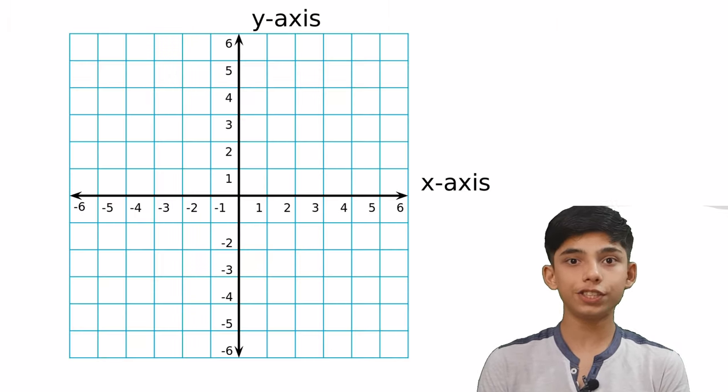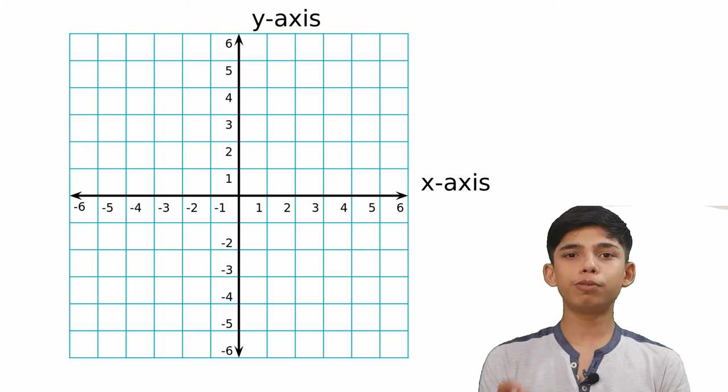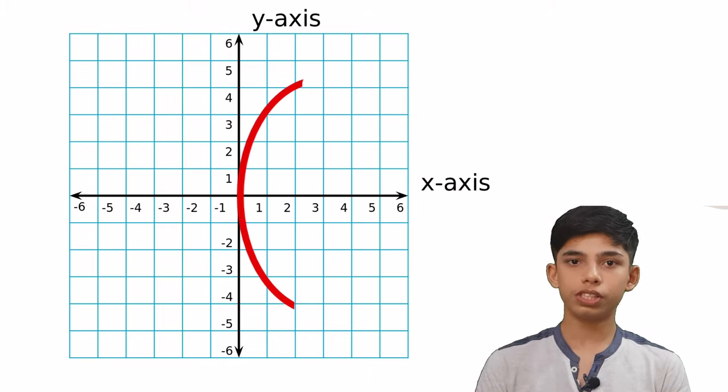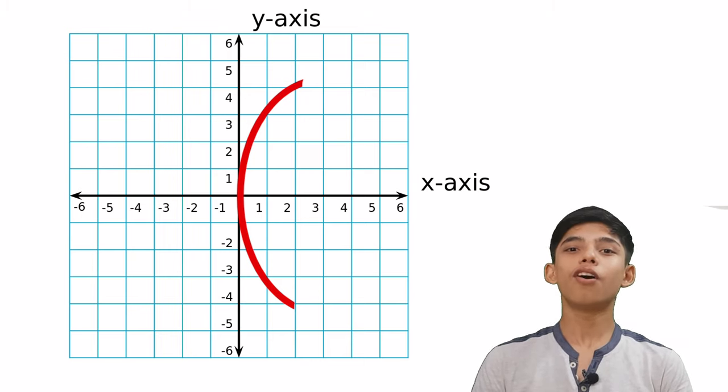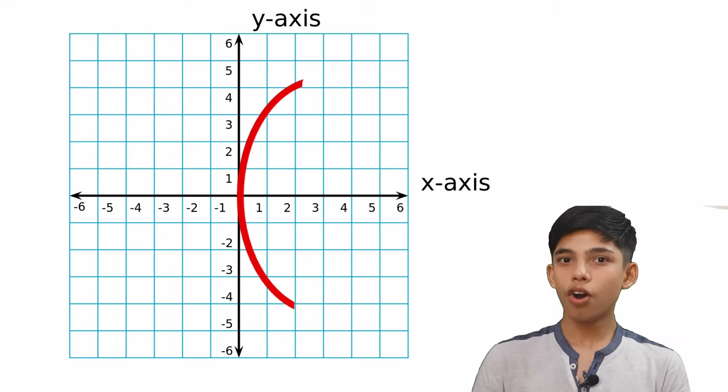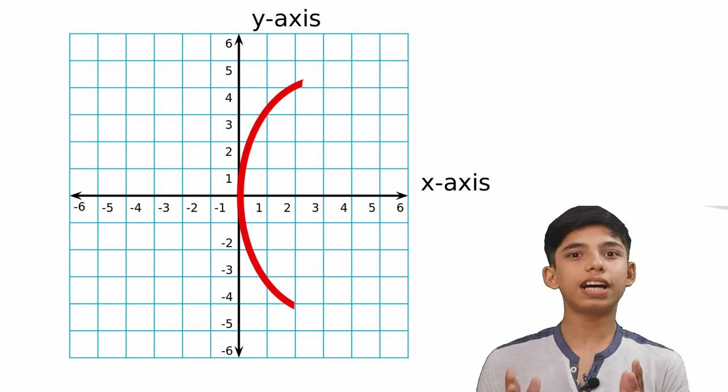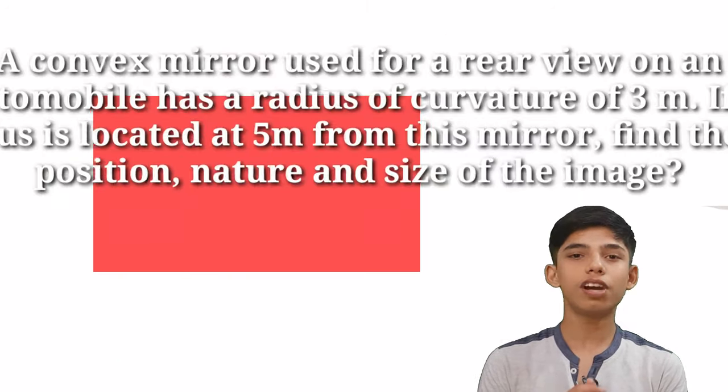Now talking about the sign convention. So here we have our Cartesian plane, x-axis and y-axis. Now let's put our convex mirror at the origin, right? Now what we can see? Yes, everything on the right and up is positive and everything on the left and down is negative. So this was our sign convention. Now keeping all these things in our mind, let us begin to solve our question.